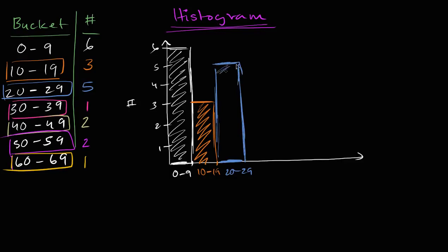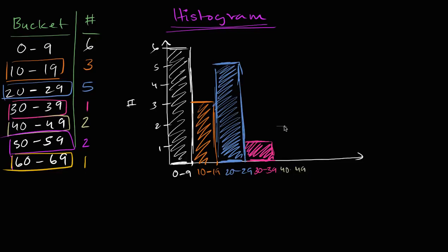I should have made the bars wide enough so I could write below them. But I've already, that train has already left. Then 30 to 39, that's going to be this bar right over here. We have one person. And then we have 40 to 49. We have two people. So it looks like this. Almost there. 50 to 59, we have two people. We also have two people. So that's that right over there.